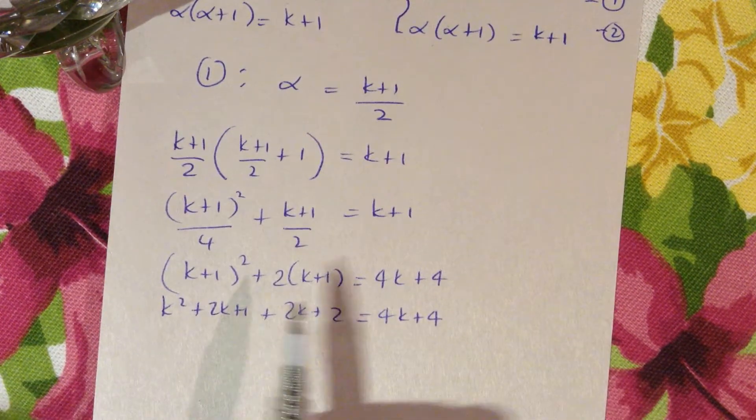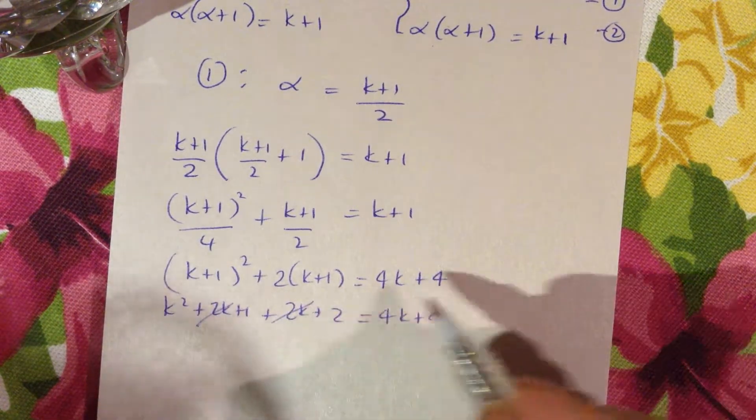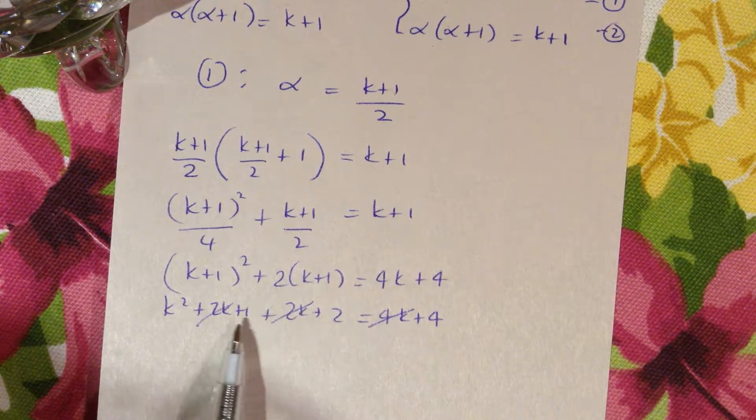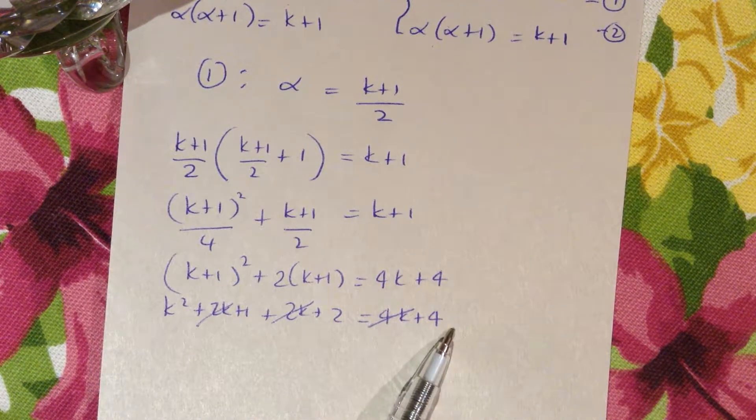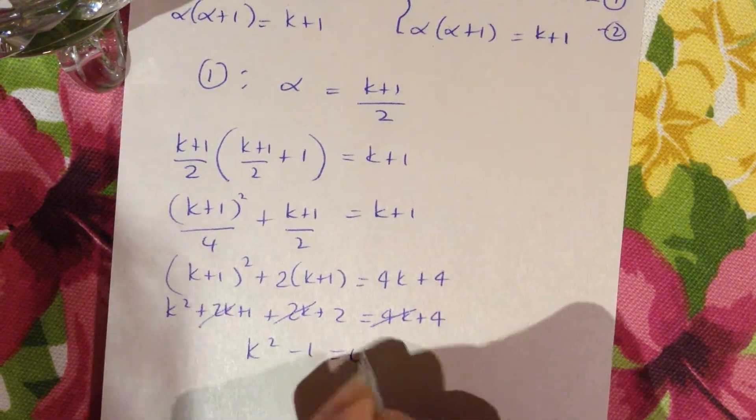We have 2k + 2k + 4k, so they will all go. Then we have 1 + 2, that's 3. We've got a 4 on this side, so 3 - 4 is -1. Here we're going to have k² - 1 = 0.